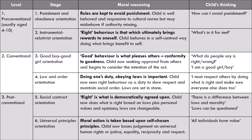Stage two is the instrumental relativist orientation. Right behaviour is that which ultimately brings rewards to oneself. A child behaves in a self-centred way and does what brings benefit to them — 'What's in it for me?' They're more reward-seeking here, likely to do something moral such as help somebody out if they know they're going to get praised for it or given a treat.